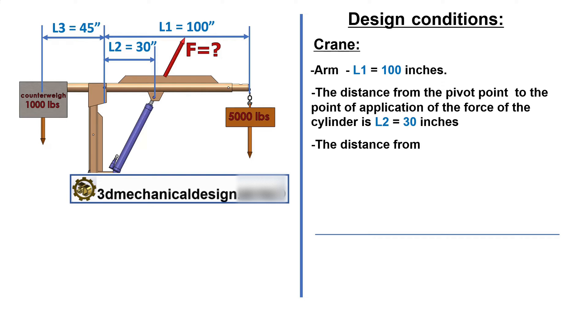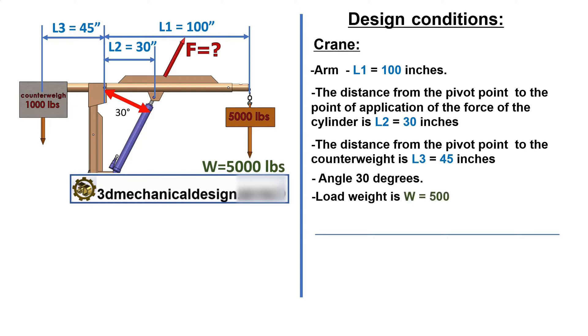The distance from the pivot point to the counterweight is L3 equals 45 inches. Angle 30 degrees. Load weight is W equals 5,000 pounds.